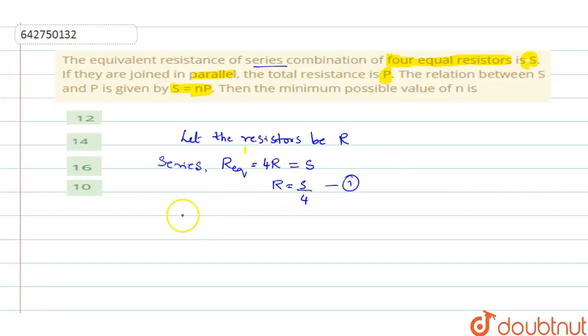Similarly, we will write it for parallel. So when the same four resistors are connected in parallel, what is the value they are telling? It is P.